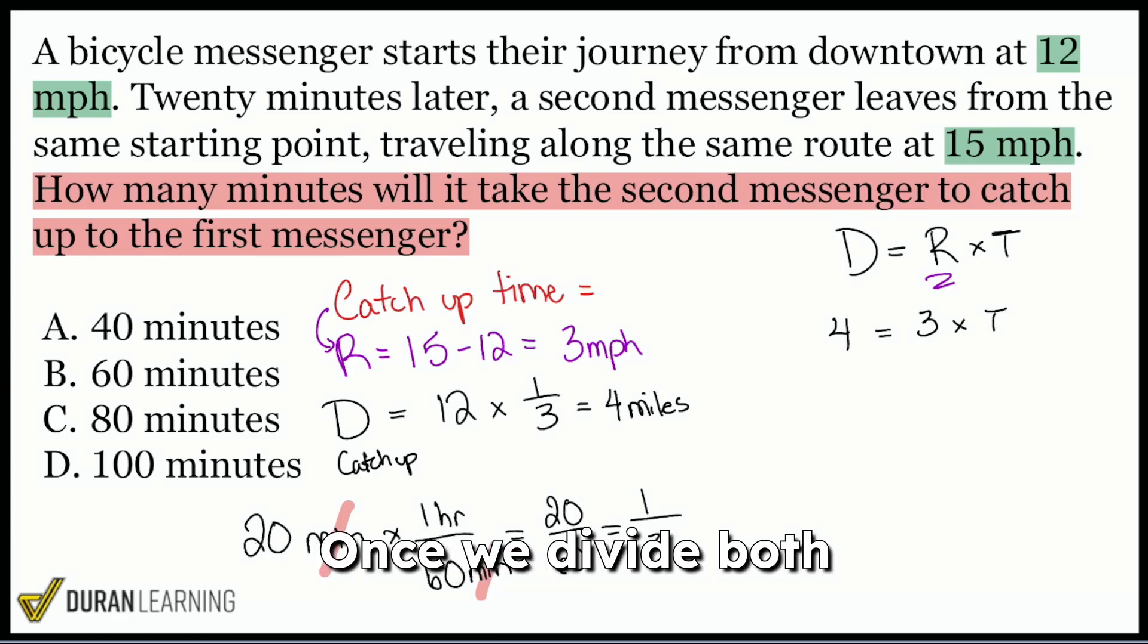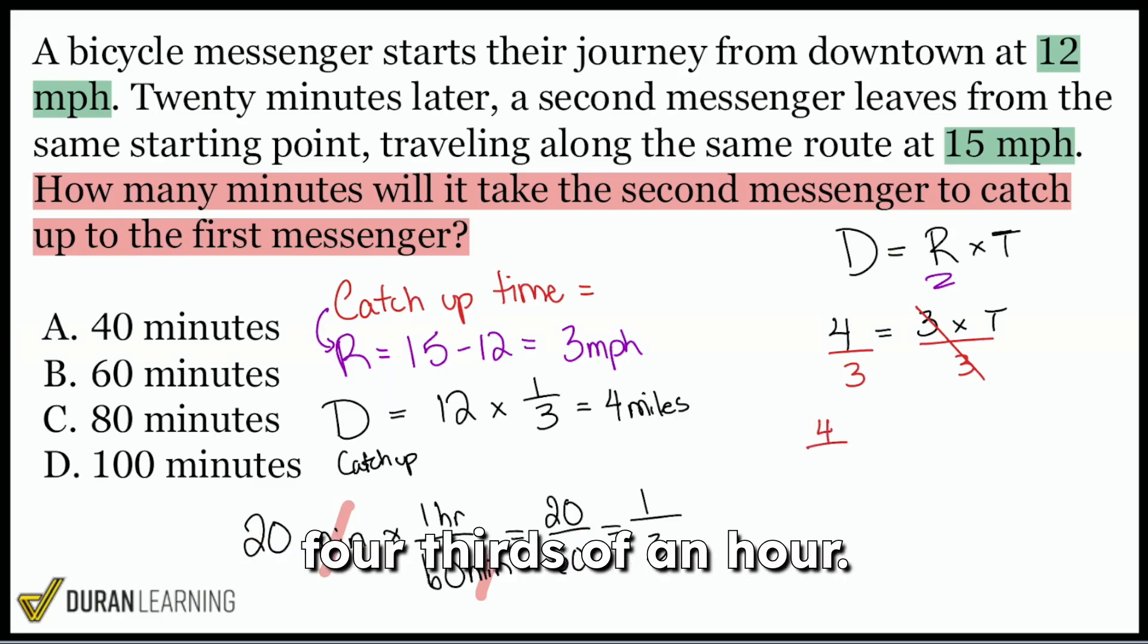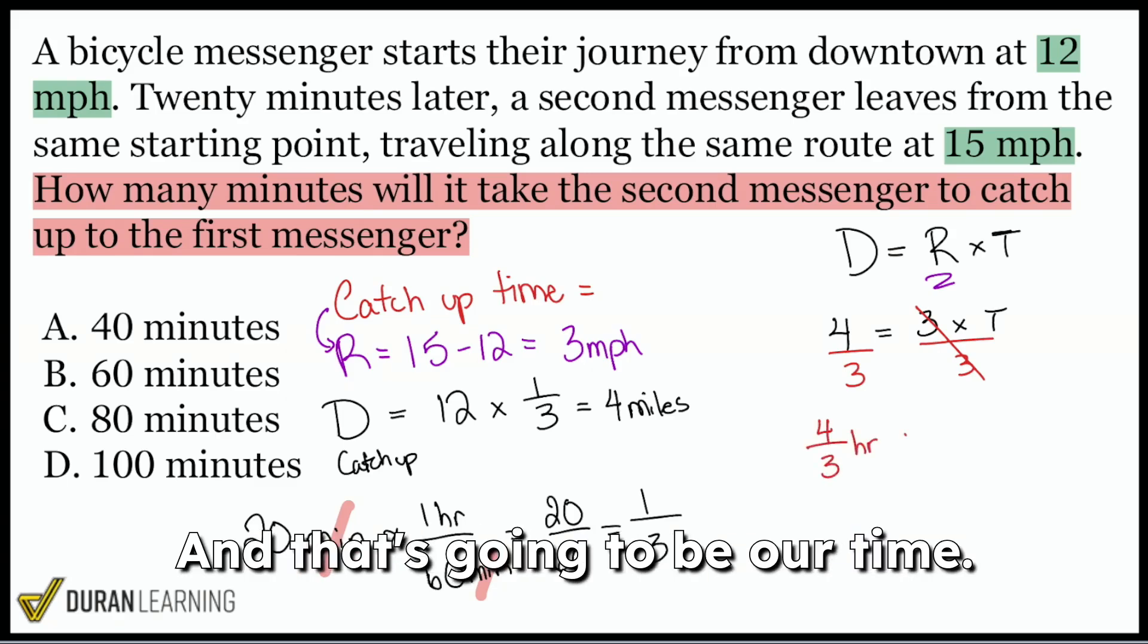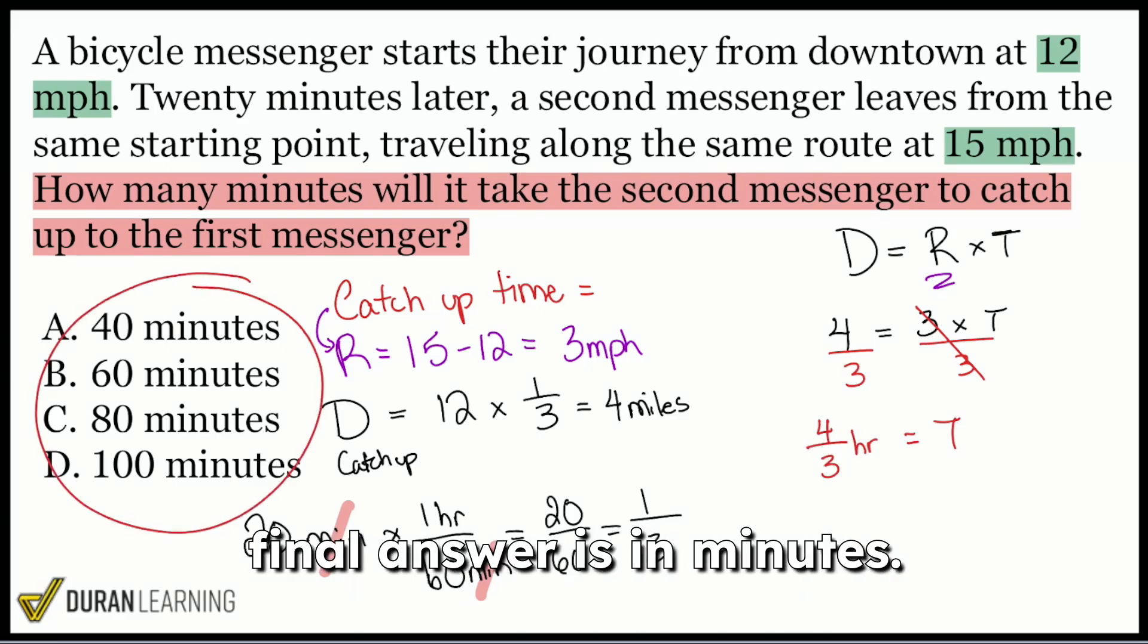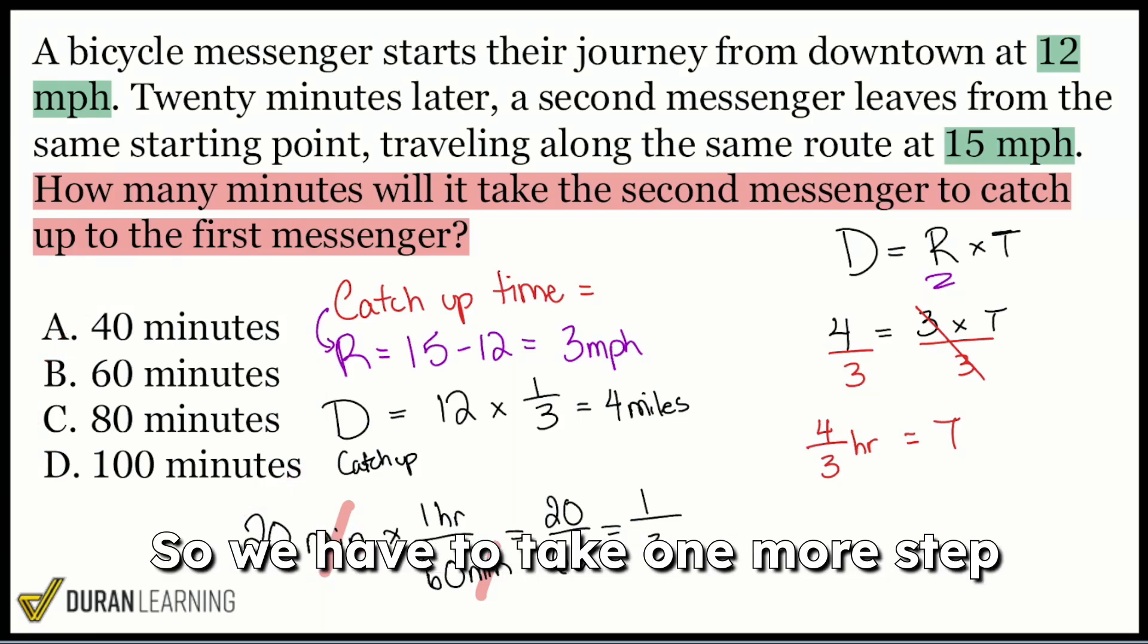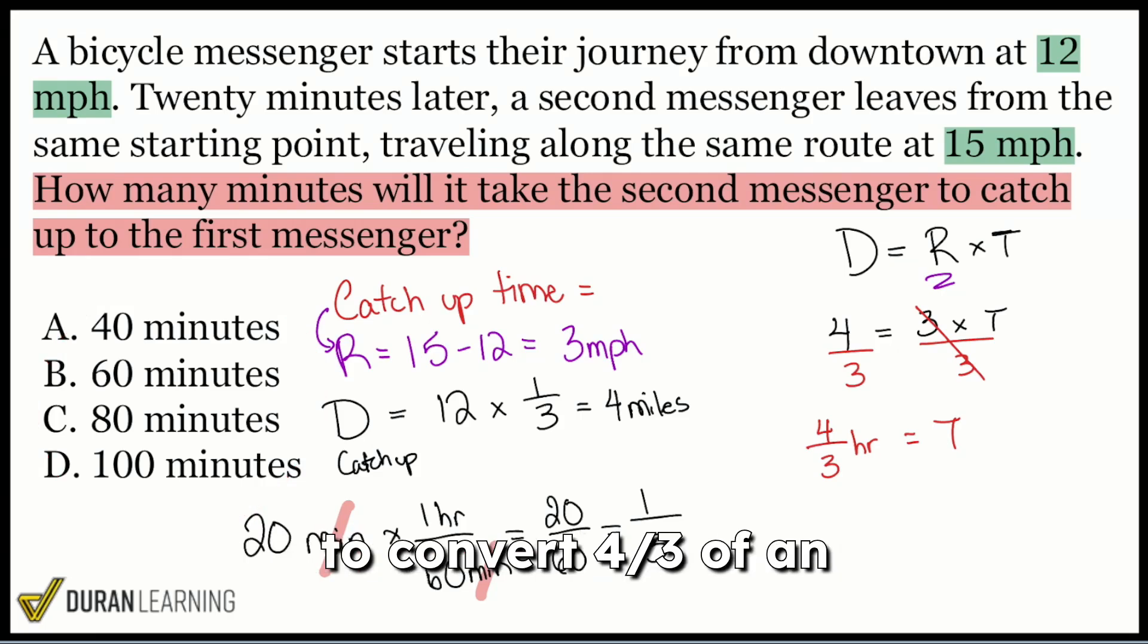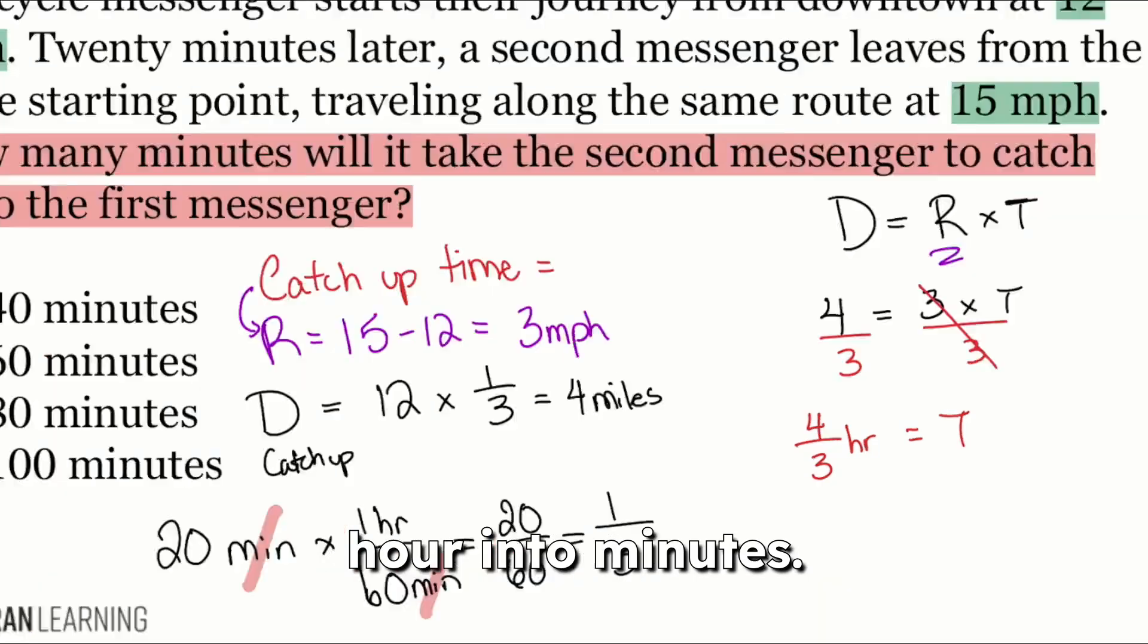We have four miles. We have three miles per hour as the catch up rate there. And then we're going to find that time. Once we divide both sides by three, cancels out. And that's going to give us four thirds of an hour. And that's going to be our time. But clearly that's not sufficient enough because our final answer is in minutes. So we had to take one more step to convert four thirds of an hour into minutes.